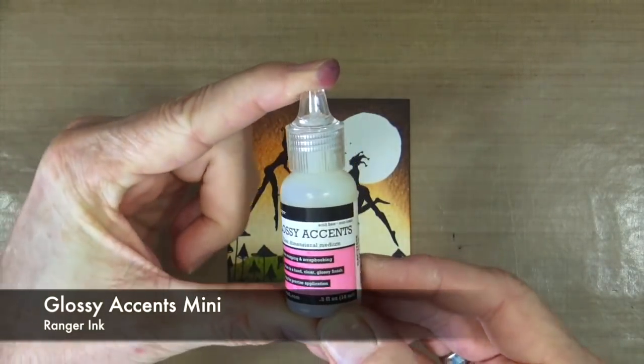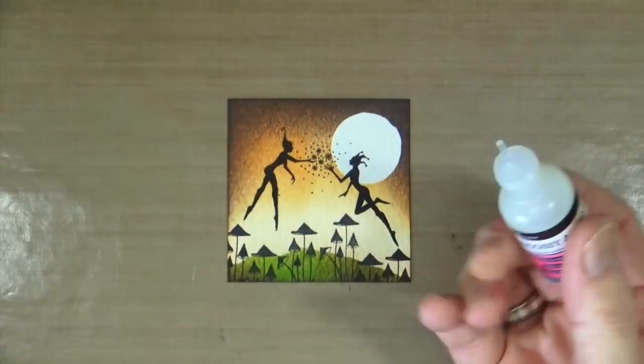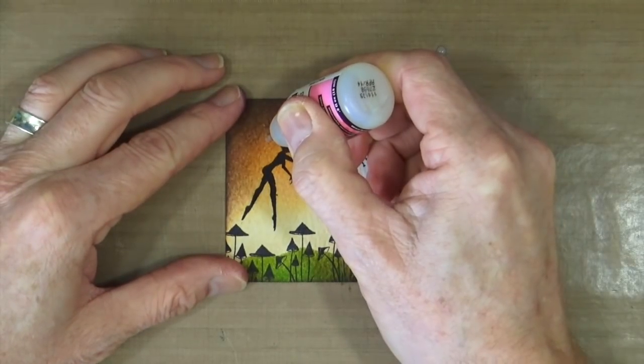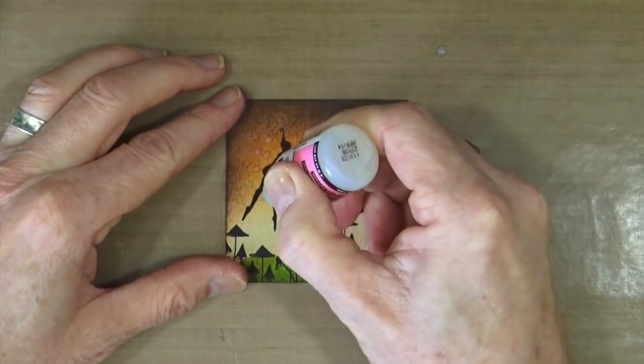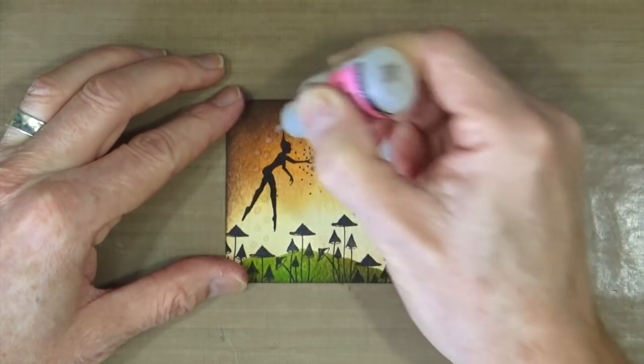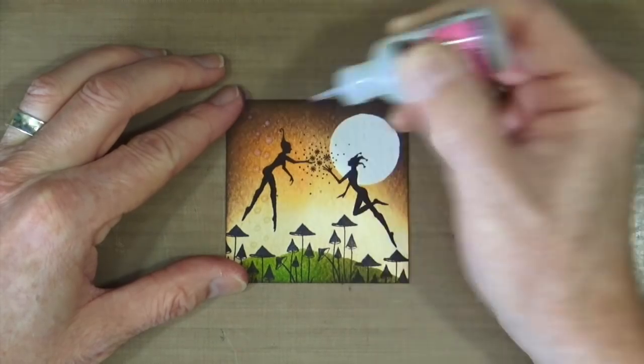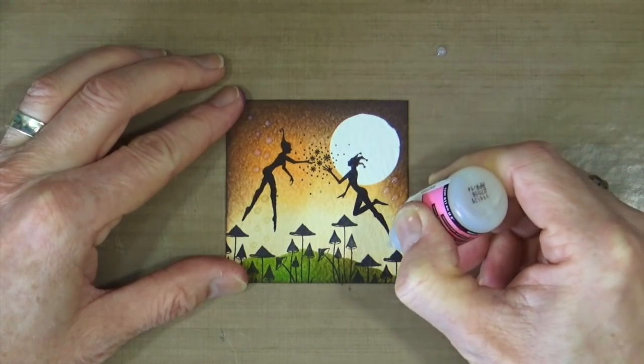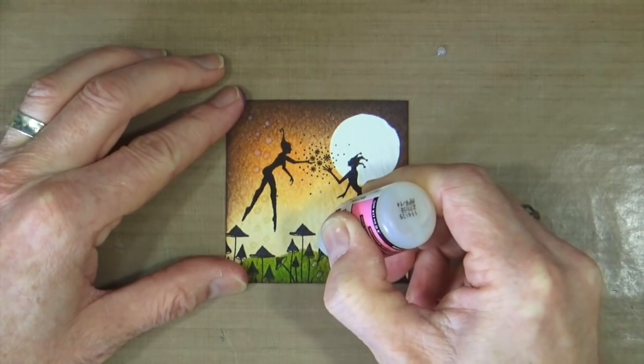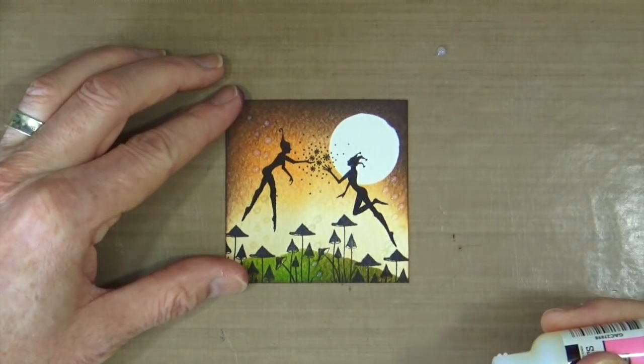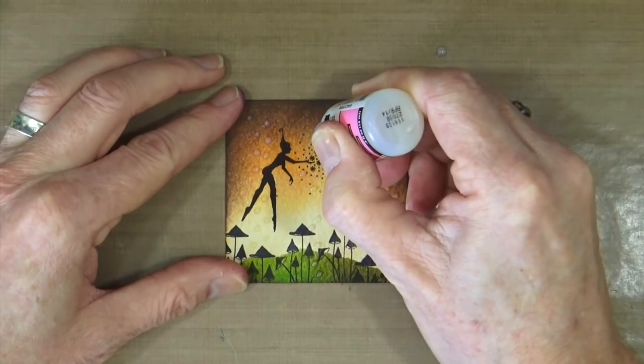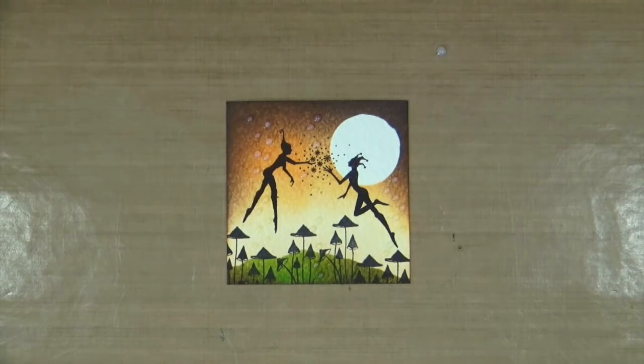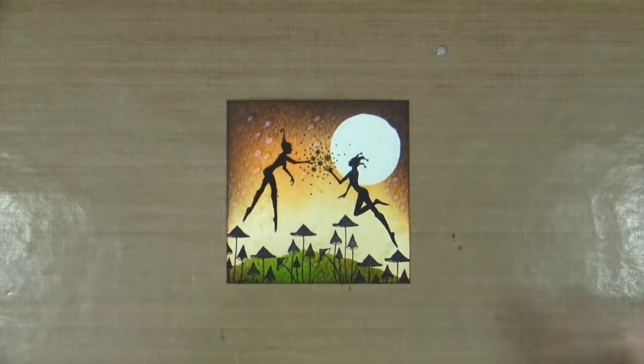And because we're dealing with fairies, we're also dealing with fairy magic and pixie dust, so I'm going to add some small accents of glossy accents onto the background of my picture, just by putting some very small little dots. These will take a little while to dry, so when I'm done I'm going to pop the picture to one side and then start work on the frame.